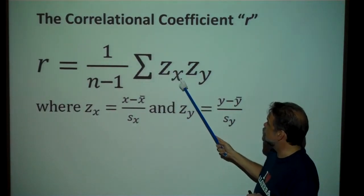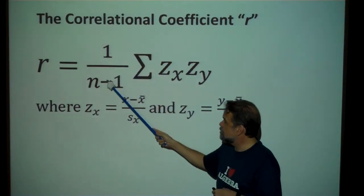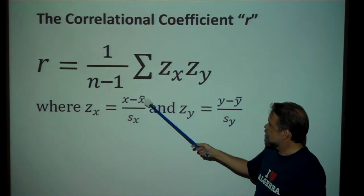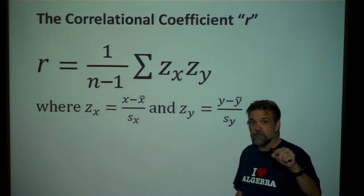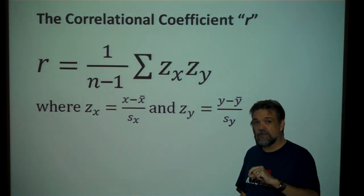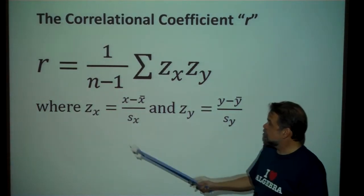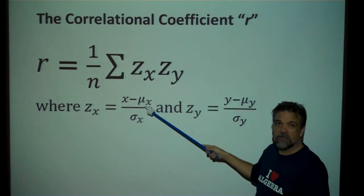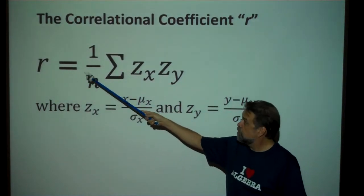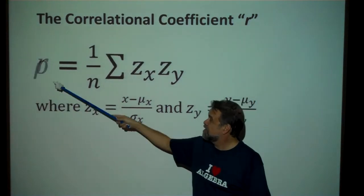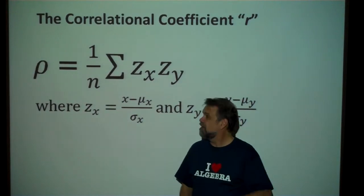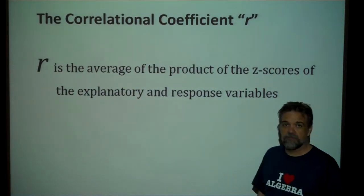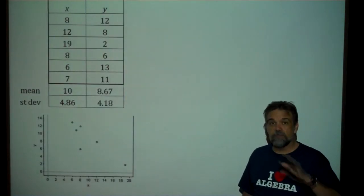We're summing up all the products of the z-scores of the x and y variables, then dividing by n minus 1. Why n minus 1 and not n? Because here we're using sample statistics — sample mean and sample standard deviation. Sample standard deviation is calculated slightly differently from the population standard deviation, dividing by n minus 1. If you wanted to use population parameters instead, you'd end up with the same number but would call it rho, the Greek R. But don't worry about that — just think of R as the average of the product of the z-scores.